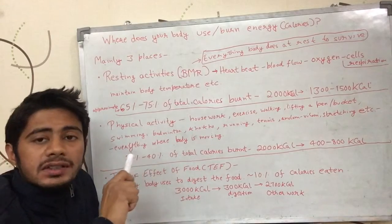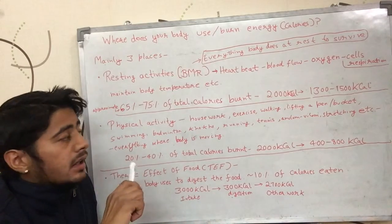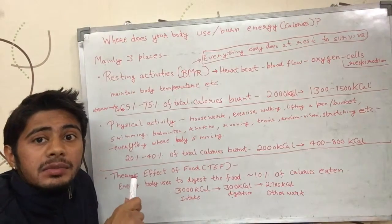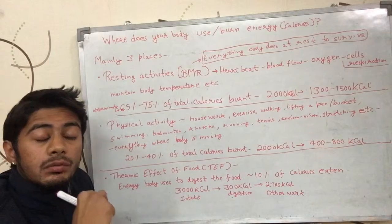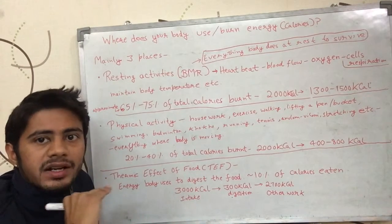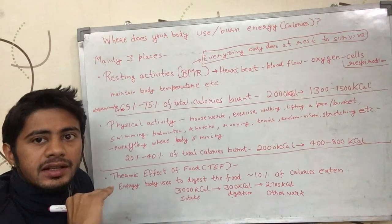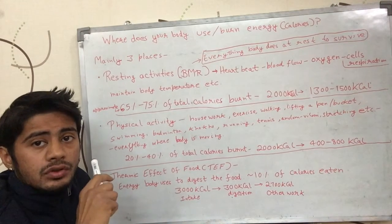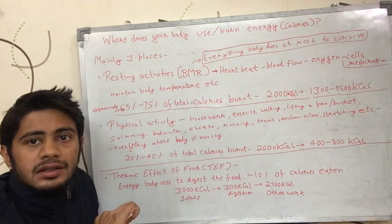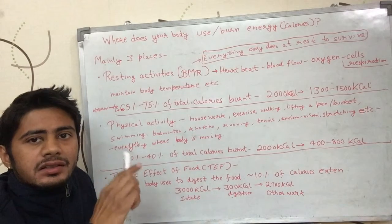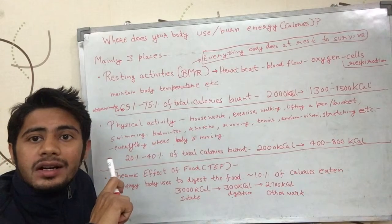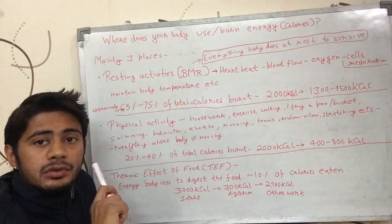Another example is that your body maintains its temperature at a particular level. If you are in very cold weather, it will try to maintain temperature at a certain level to survive, and that is where it uses energy. There can be many other things where the body uses energy, but these examples explain where the body burns energy even when at rest — mainly to survive.